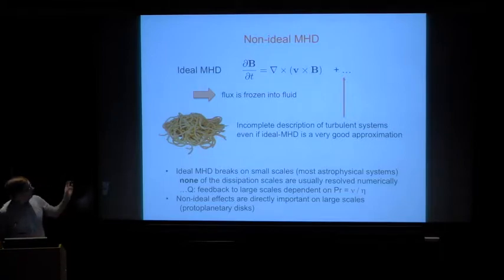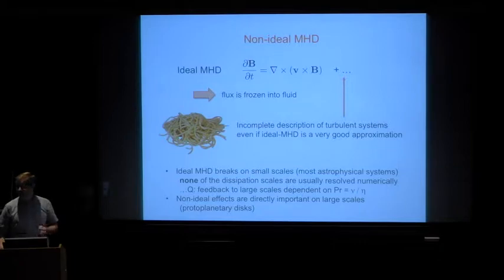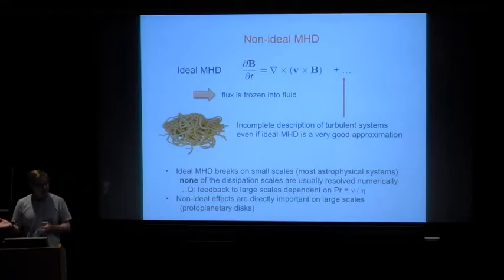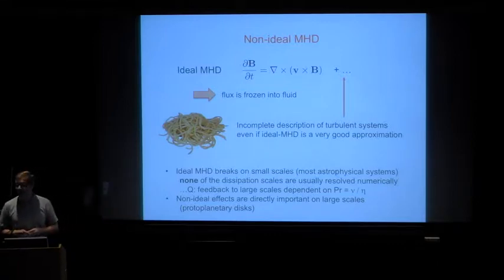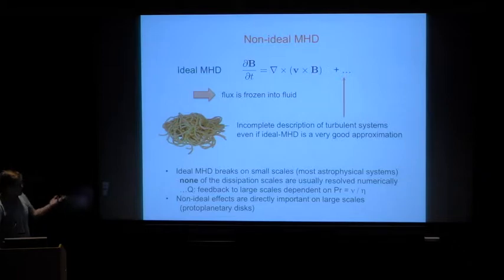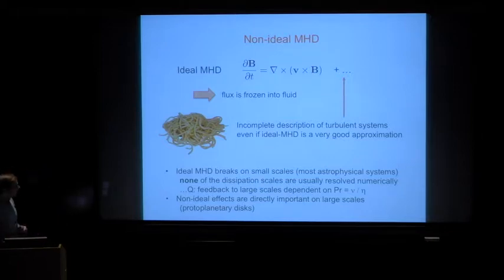In well-ionized systems, the breakdown of ideal MHD is occurring on small scales due to things like formation of current sheets. From a numerical point of view, that has the consequence that we're often dealing with circumstances where none of the dissipative effects — due to the finite conductivity of the fluid or its viscosity — are properly resolved numerically. This is an interesting difference between astrophysical fluids and engineering fluids. In engineering-type communities people are very concerned about simulations where you don't have the correct Reynolds number. In astrophysics, very often that's the case. If you think about something like the sun, dissipation scales are much, much smaller than any numerical scale you can resolve.